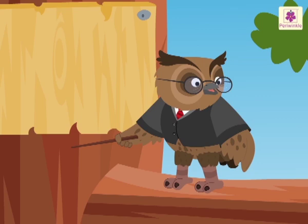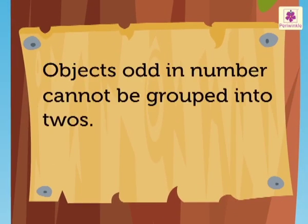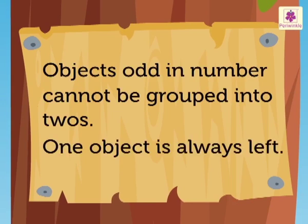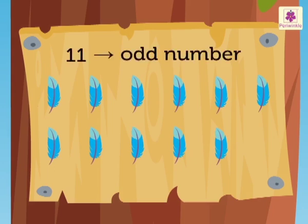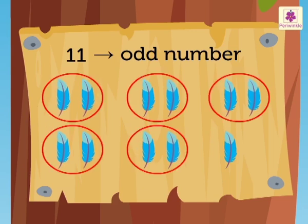Kids, objects odd in number cannot be grouped into 2's. One object is always left. Let me show you how. We know that 11 is an odd number. So, here when we group these 11 feathers into 2's, one feather will be left alone.